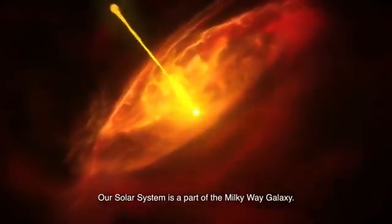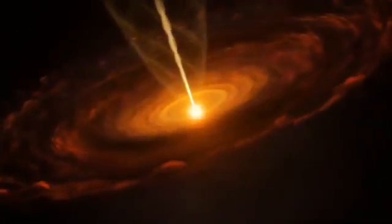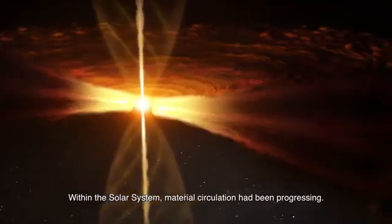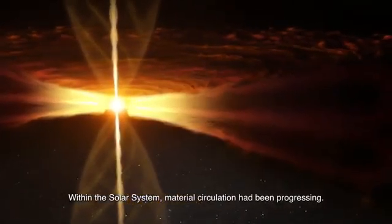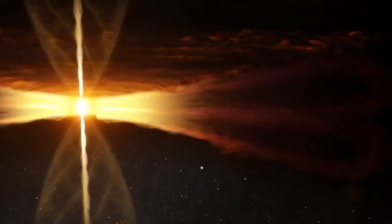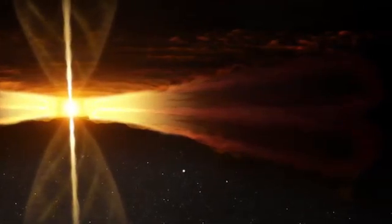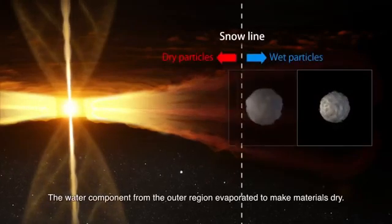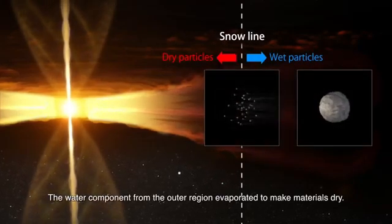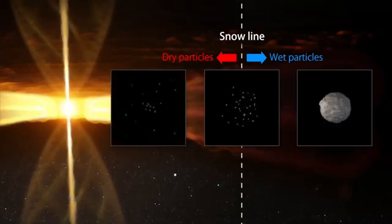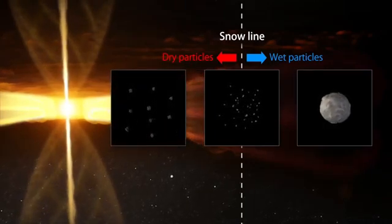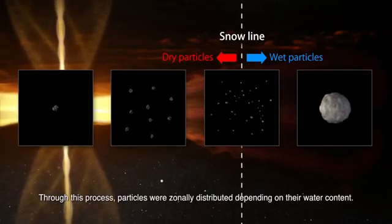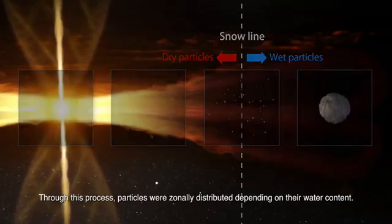Our solar system is a part of the Milky Way galaxy. Within the solar system, material circulation had been progressing. The water component from the outer region evaporated to make materials dry. Through this process, particles were zonally distributed depending on their water content.